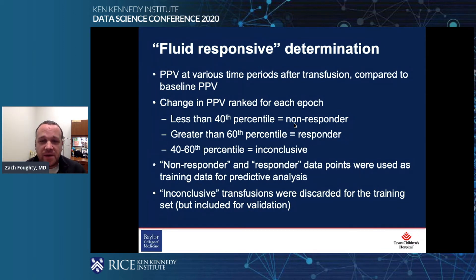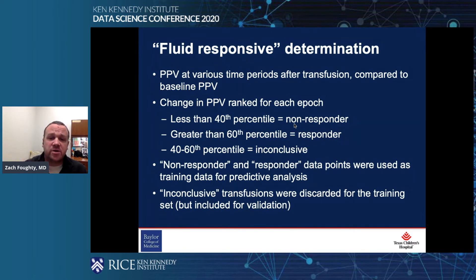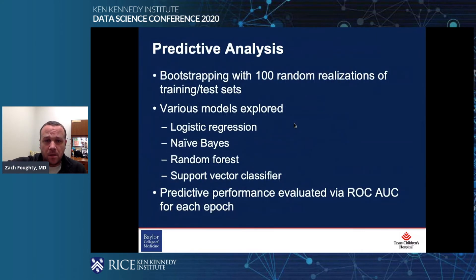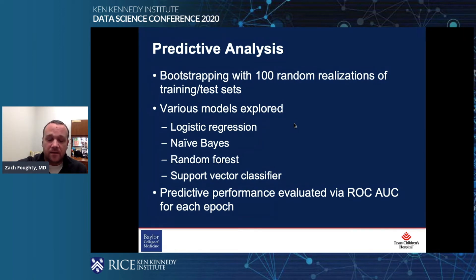We used our Fourier transform to calculate pulse pressure variation. To determine fluid responsiveness, we looked at PPV at baseline for 15 minutes prior to transfusion, then in 30-minute moving windows after transfusion. Changes in PPV below the 40th percentile were classified as non-responders, above the 60th percentile as responders, and between 40th and 60th percentile as inconclusive. For our training set we used only non-responders and responders, then included inconclusive patients for validation using bootstrapping with 100 random realizations of training and test sets.